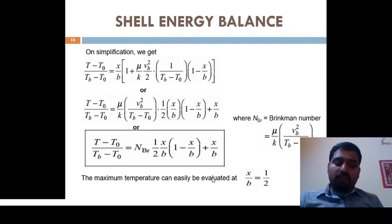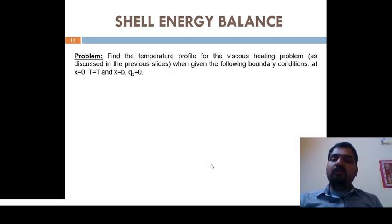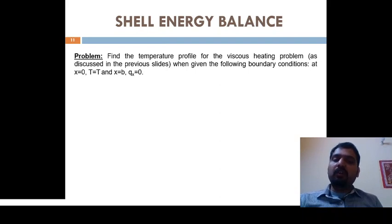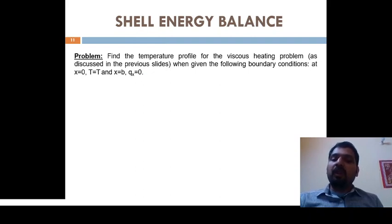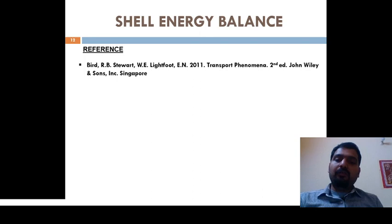In conclusion, for your practice problem, derive the temperature profile for the same viscous heating problem but with different boundary conditions. The previous boundary conditions were T = T0 at x = 0 and T = Tb at x = b. The new boundary conditions are: T = T0 at x = 0, and qx = 0 at x = b. For this case, generate both the temperature profile and the maximum temperature.